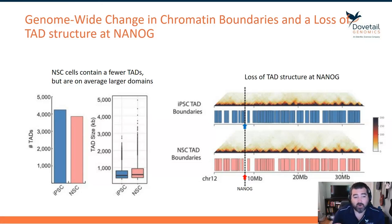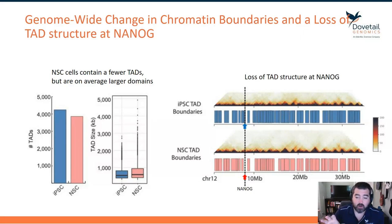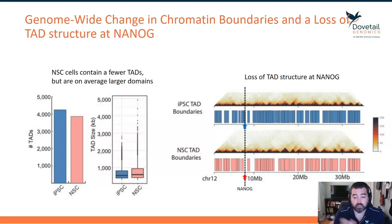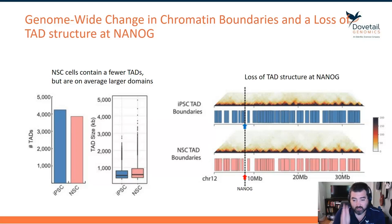If we specifically ask what the TAD structure looks like around NANOG, we see it plotted on the right, showing the interactome heat map for both iPSC and NSC, along with TAD boundaries plotted as blocks across chromosome 12. Right where NANOG lives, indicated by the dotted line, we can see a TAD boundary flanking NANOG.